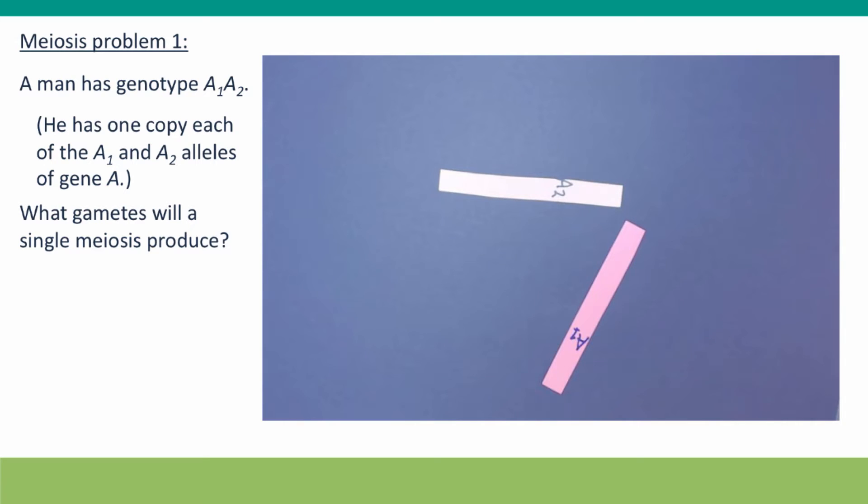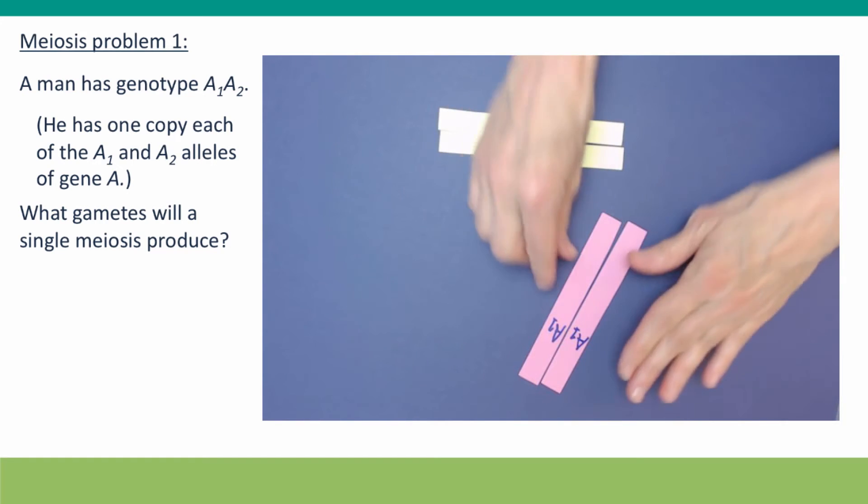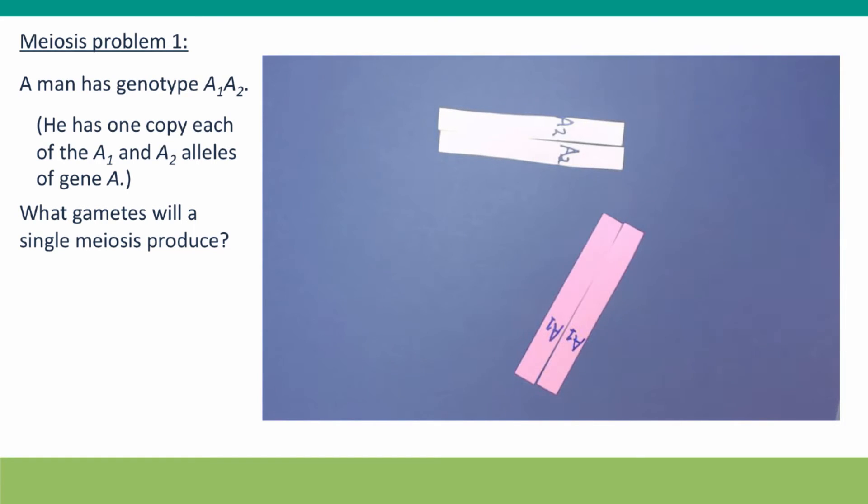Now the first thing that's going to happen is that our chromosomes are going to replicate their DNA. Here are the sister chromatids. Just as in mitosis, the sister chromatids stay together, paired along their length, held together by loops of cohesin protein.